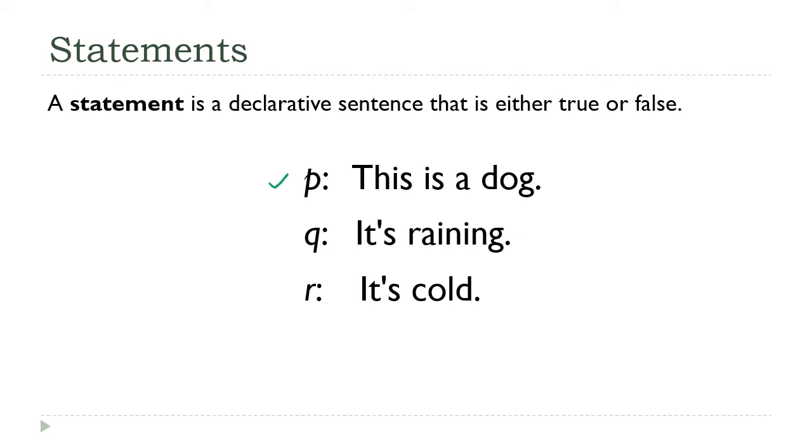Now they're all declarative sentences, so we can check that requirement off. And I would classify the first one as a statement. There's an official biological or veterinary definition of a dog, and two people looking at the same animal with the same checklist to work from should come to the same conclusion. Now I would also classify the second sentence as a statement.